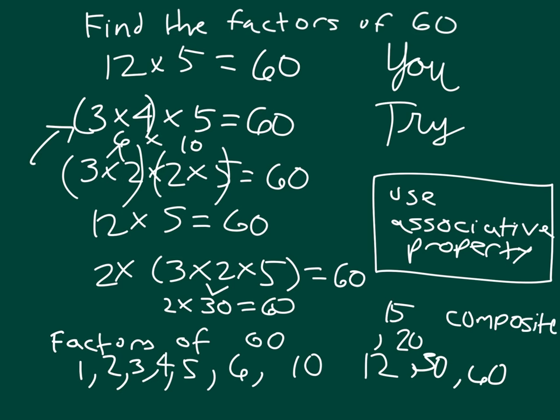So we can use the associative property to figure out and help us figure out factors. We also could just use division. We know that 60 is divisible by 1, divisible by 2, divisible by 3. We could test to see whether or not we can go 60 divided by 6. And then so that would have been another way that we could have looked at this here to find factors, to find the corresponding factor pair.